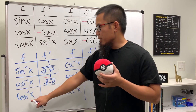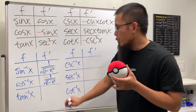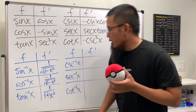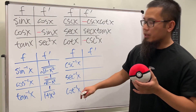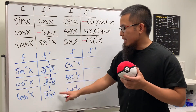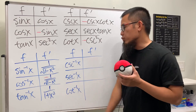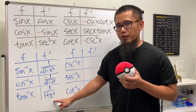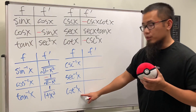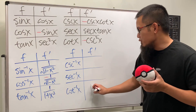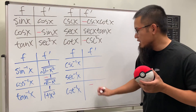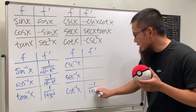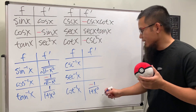Next, the derivative of inverse tangent x is 1 over 1 plus x squared. This one and inverse sine are very common in calculus 2, so remember them well. And once you have inverse tangent, you know inverse cotangent for free — it's just the negative: negative 1 over 1 plus x squared.